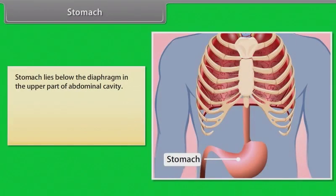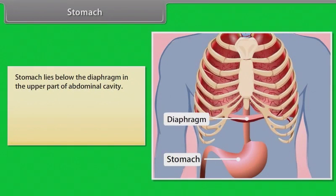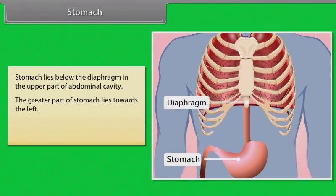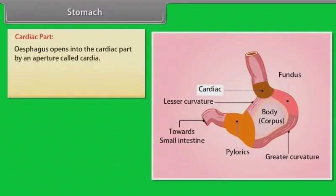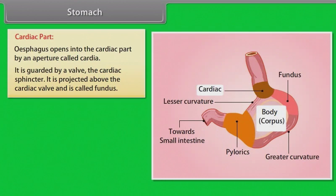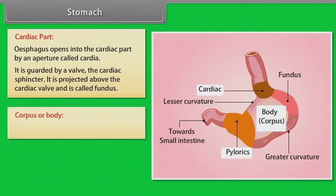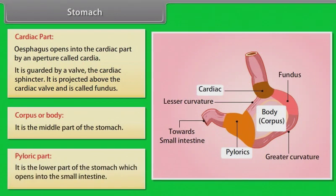The stomach lies below the diaphragm in the upper part of the abdominal cavity, with the greater part towards the left. Stomach can be divided into the following parts: the cardiac part, where the esophagus opens through the cardia guarded by the cardiac sphincter; the fundus, projected above the cardiac valve; the corpus or body, which is the middle part; and the pyloric part, the lower part which opens into the small intestine.